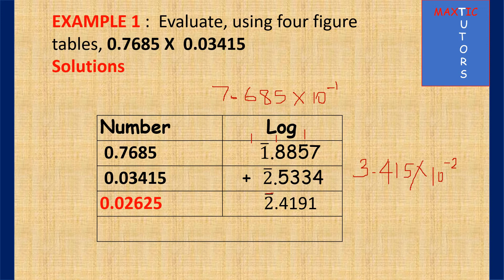And so you now go and look at antilog. Go to your 4 figure table and look at antilog. So antilog of 41 under 9 difference 1, and that will give you 2625. But because you have bar 2 here, which is 2 zeros, so you put 2 zeros in front of 2625. There will be 1 zero before the decimal and 1 zero after, so your answer will be 0.02625.